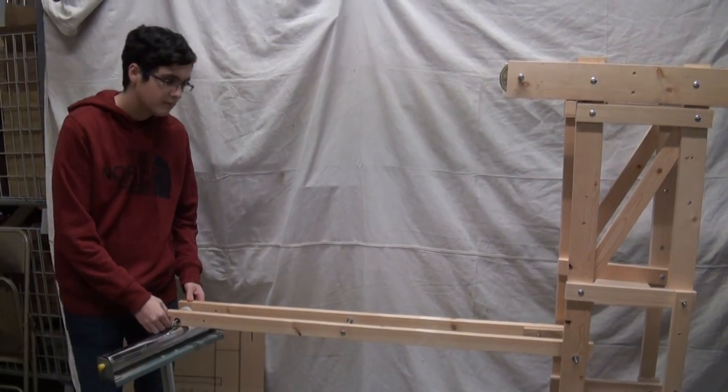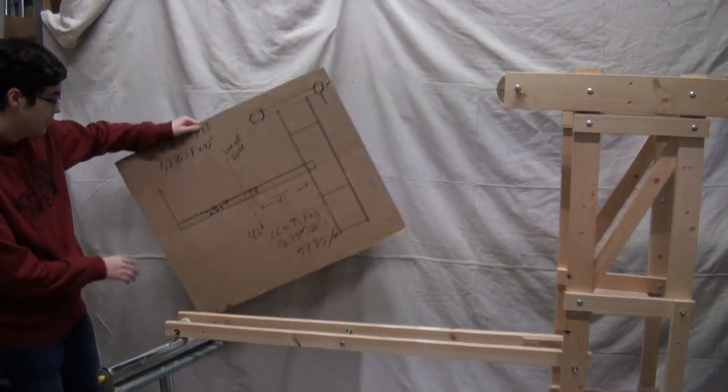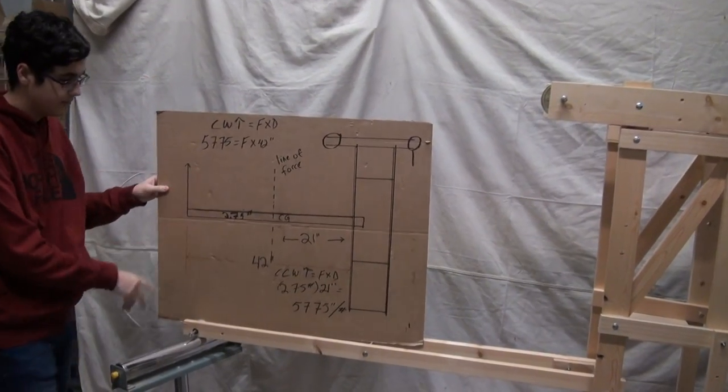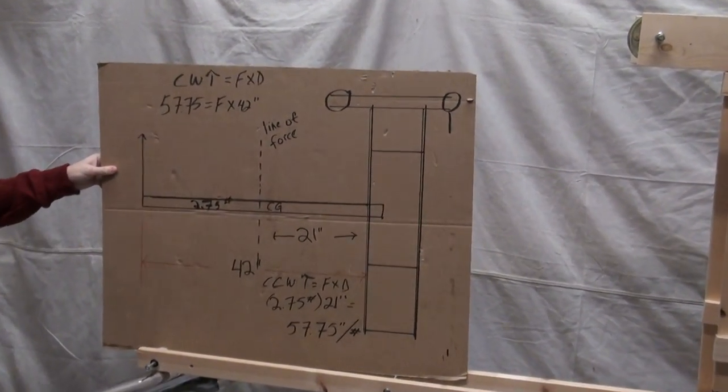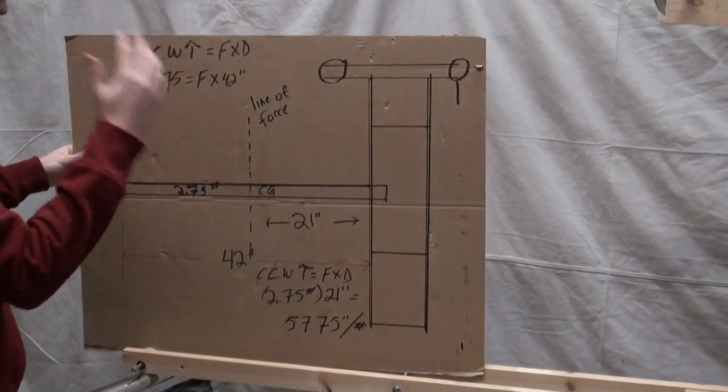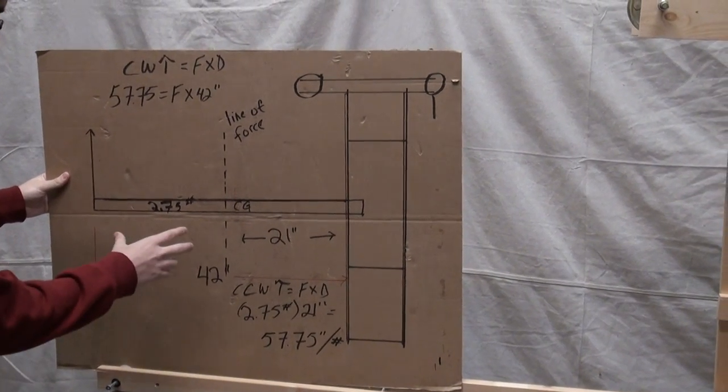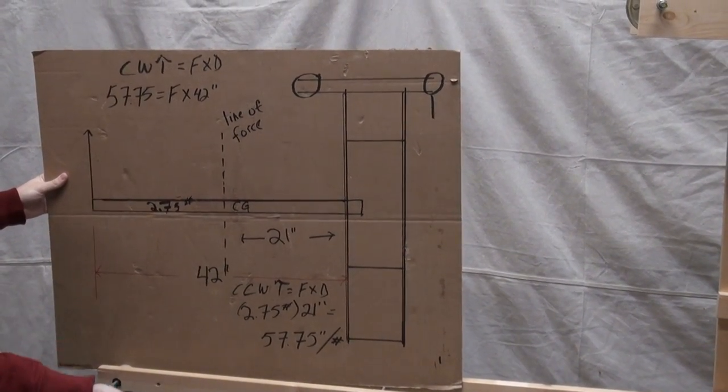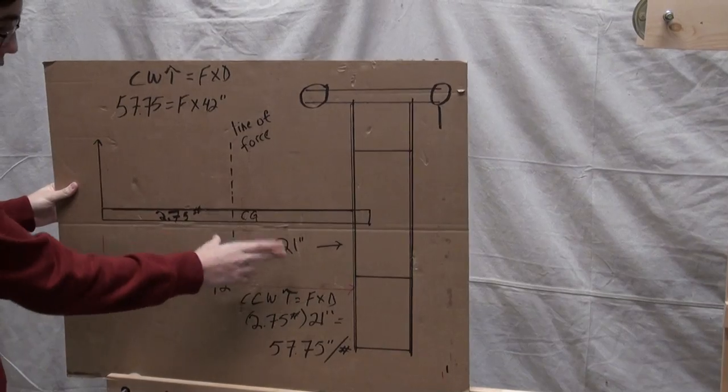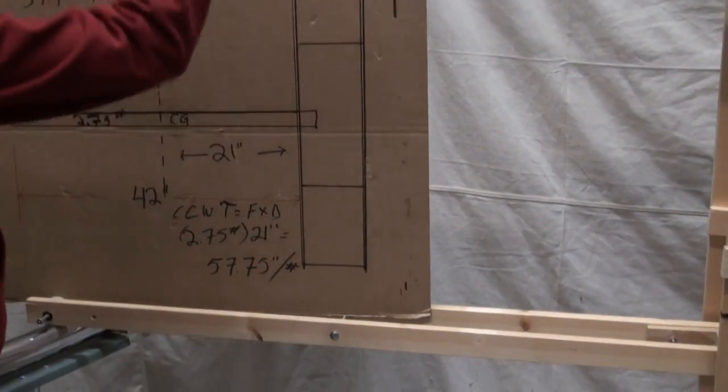So the deck weighs 2.75 pounds. And for the deck itself, all we do is we take force times distance because that's torque. We get 21 inches. If you remember, we take it from the line of force.